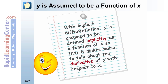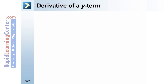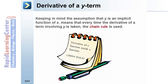Now, y is assumed to be a function of x. With implicit differentiation, y is assumed to be defined implicitly as a function of x so that it makes sense to talk about the derivative of y with respect to x. Keeping in mind that every time the derivative of a term involving y is taken, the chain rule is used.